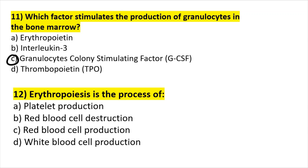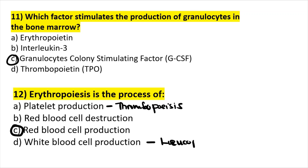Erythropoiesis is the process by which red blood cells are formed. Platelet production is called thrombopoiesis. White cell production is called leukopoiesis. Red cell destruction is called hemolysis. You need to know these terms when it comes to blood — very important.